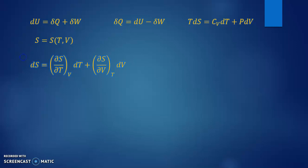And let's calculate the differential of the entropy, like that. The differential of the entropy will be the derivative of the entropy with the temperature times dT, and the derivative of the entropy with the volume times dV.